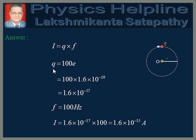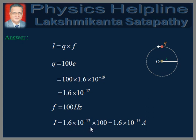It is given that the charge on the particle is equal to 100 times that on a proton, and the proton charge is 1.6 × 10⁻¹⁹ coulombs. So 100E is 100 multiplied by that, which gives us 1.6 × 10⁻¹⁷ coulombs. It is also given that F is equal to 100 hertz. Therefore, I = Q × F = 1.6 × 10⁻¹⁷ × 100 = 1.6 × 10⁻¹⁵ amperes.